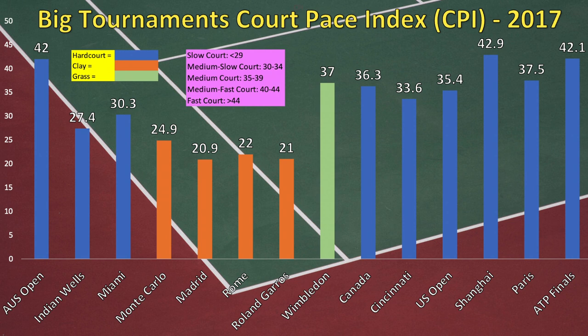Wimbledon is the lone grass Major and the only grass tournament on this chart, with a CPI rating of 37 — a little bit slower than the Australian Open but still considered a medium court, really almost a medium-fast court. The other thing about grass is that the ball skids more and stays lower, so the slice is much more effective on grass, as opposed to clay where the ball bounces higher.